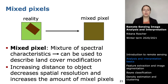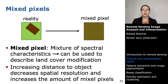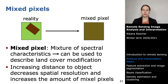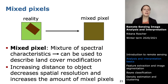Increasing the distance to an object decreases spatial resolution and increases the amount of mixed pixels. Aerial photos have a lot of detail but a small field of view. When you put the sensor on a satellite, the number of pixels is the same but the satellite covers a much larger area, decreasing spatial resolution. Objects get smaller and smaller in the image while pixel size stays the same, so you get much more mixture of different land cover classes per pixel.